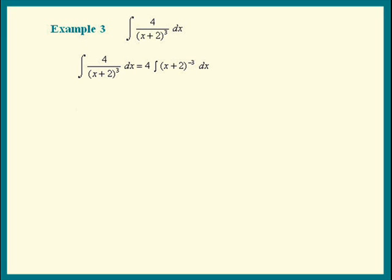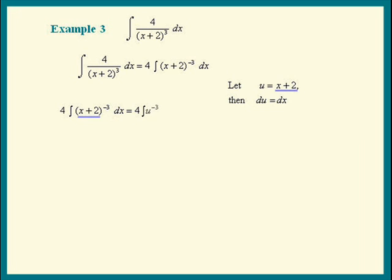So let's let u equal x plus 2. du is the derivative times dx, so we get du equals 1 times dx. Let's substitute the u's into this integral. The x plus 2 becomes u. We have 4 times the integral of u to the negative 3. Now we see dx — and what's dx? It's equal to du. So just write that in, and we see the power rule for the integral of u to the negative 3 du.